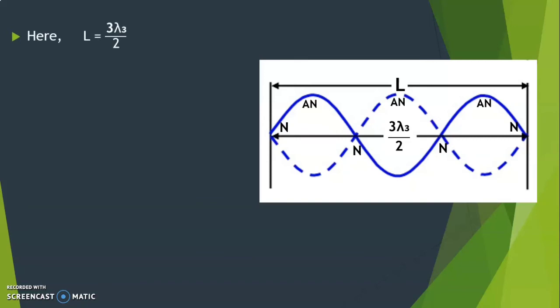Here, L equals 3 lambda 3 by 2, which implies lambda 3 equals 2L by 3. Let f3 be the frequency of vibration. Then f3 equals v by lambda 3.